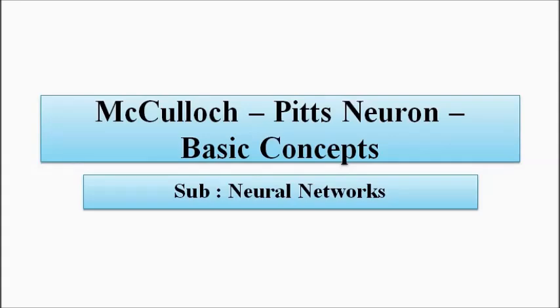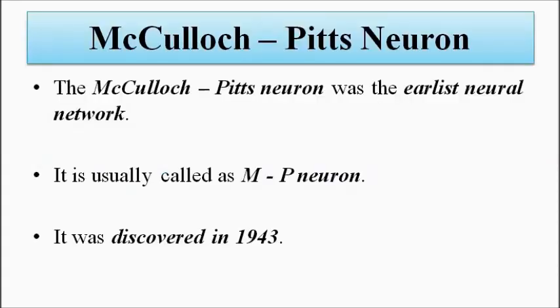In this video we are going to discuss a specific very simple neural network model which is McCulloch-Pitts neuron. We'll be discussing some basic concepts related to it. The McCulloch-Pitts neuron is also called as the MP neuron, and it was the earliest and the most simplest of neural networks.